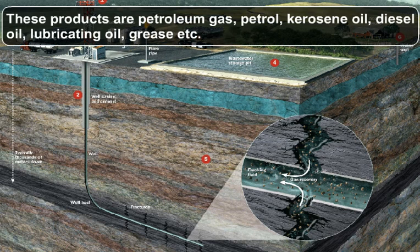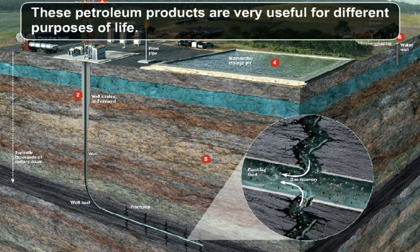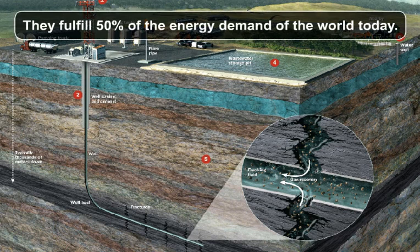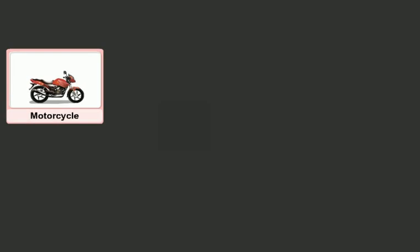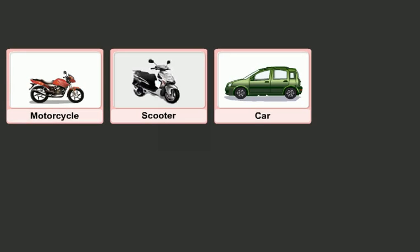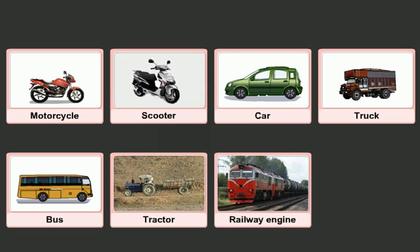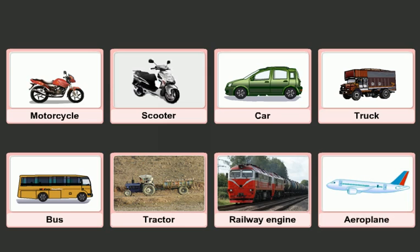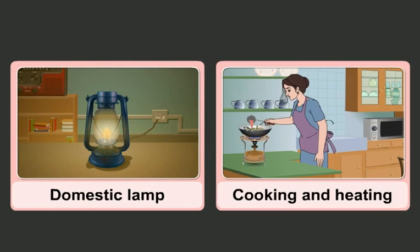The products of petroleum include petroleum gas, petrol, kerosene oil, diesel oil, lubricating oil, grease, etc. These petroleum products fulfill 50 percent of the energy demand of the world today. Motorcycles, scooters, cars, and other lighter vehicles require petrol to run, while trucks, buses, tractors, railway engines, and other heavier vehicles run on diesel. Refined kerosene is used to run airplanes, and kerosene is also used for domestic lighting, cooking, and heating purposes.